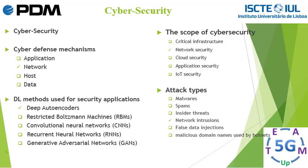The scope of cybersecurity is broad and can be grouped into five areas: critical infrastructure, network security, cloud security, application security, and IoT security. We have different types of attacks in cybersecurity: malware, spam, insider threat, network intrusion, false data injection, and malicious domain names used by botnets.